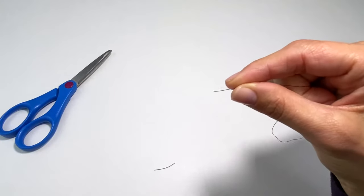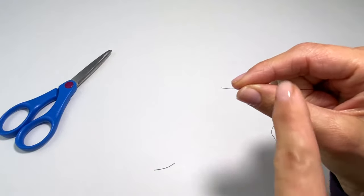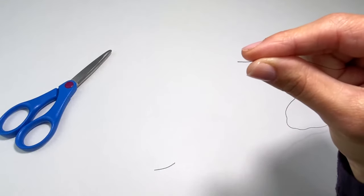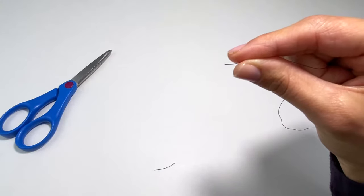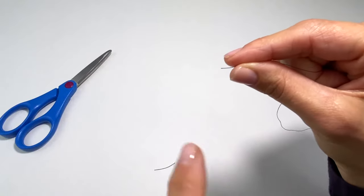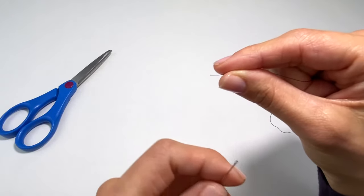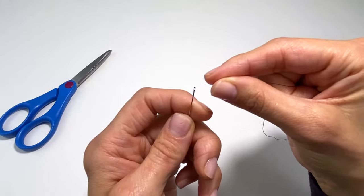Now you want to hold your thread between your thumb and your pointer finger with about that much sticking out. The thread should be taut and sticking out so it will easily go through the eye.